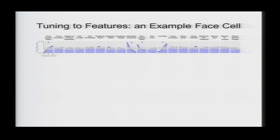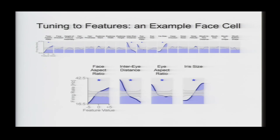And this is what the stimulus look like. And what we found was that different cells were tuned to different subsets of face parameters. So, here is an example of one cell, and the tuning to the 19 different parameters. And you can see this cell was significantly tuned to the face aspect ratio, the inter-eye distance, the eye aspect ratio, and the iris size. So, it had a maximum response to large irises and a minimal response to small irises.